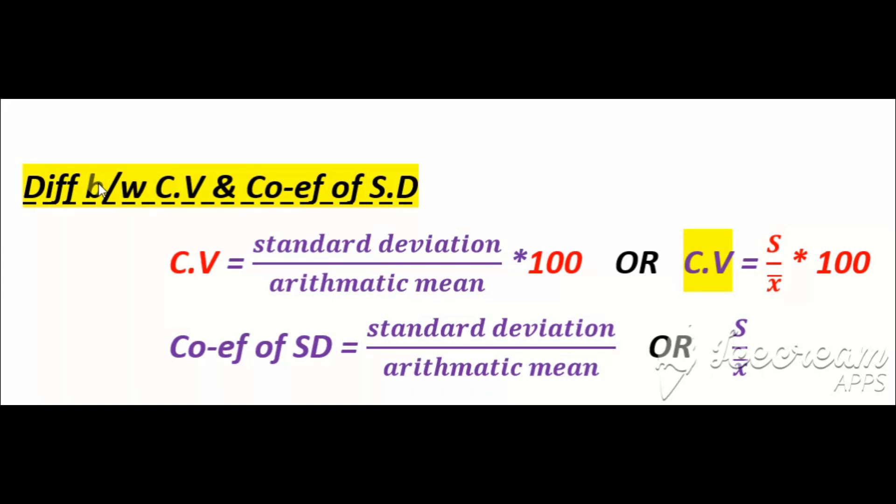Coefficient of variation is standard deviation divided by arithmetic mean multiplied by 100. You can say that s divided by x̄ multiplied by 100. This is the formula of coefficient of variation.